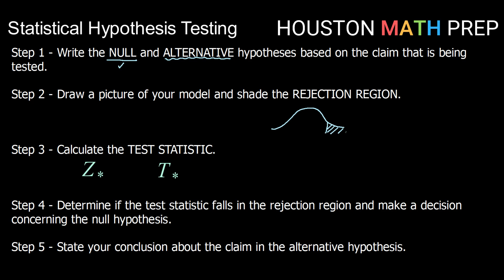Once we have that information down, we'll calculate test statistics. It's either going to be a z-score or a t-score, depending on our distribution. And then we're going to determine, is that test statistic that we found further out into the rejection region? So is it more extreme than the rejection region value that we found?